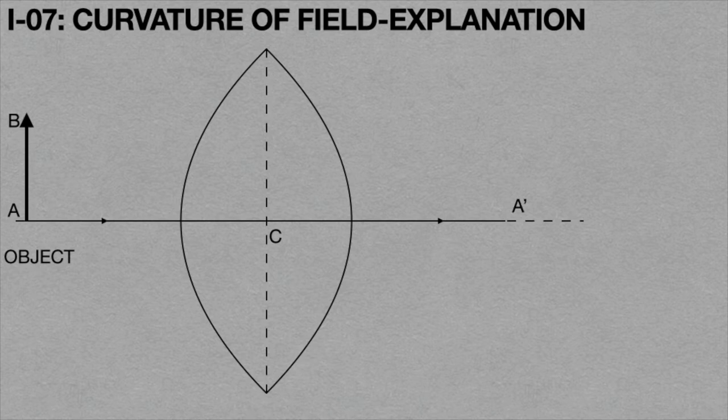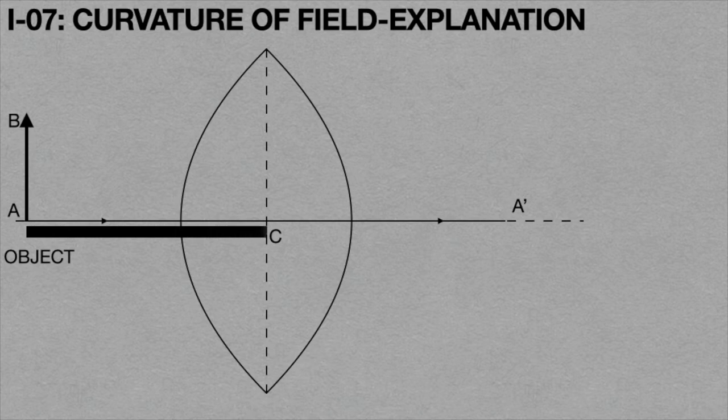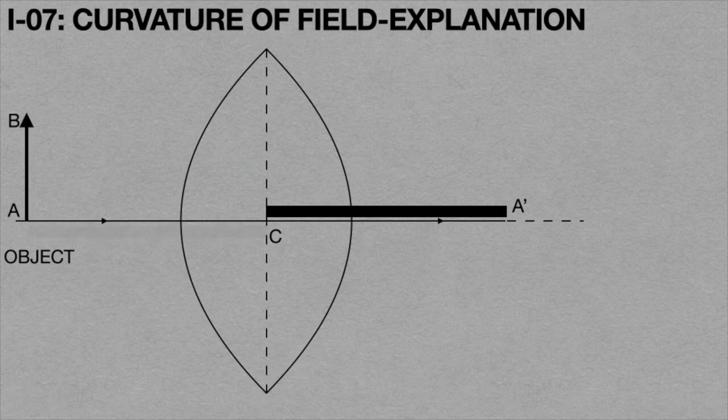Since this light ray AC A dash cannot deviate because it passes through the center of the lens C, the length of light ray AC is equal to the length of light ray CA dash.